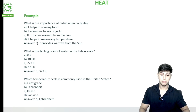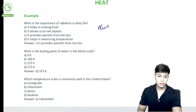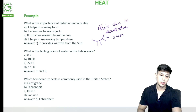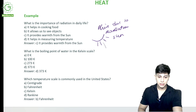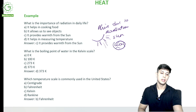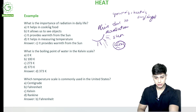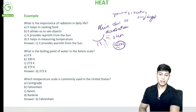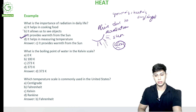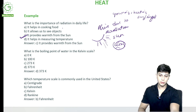What is the importance of radiation in daily life? If radiation did not exist, what would happen to the Earth? We are alive due to radiation from the sun — we are not in contact with the sun, but the light and heat it emits as radiation comes to Earth and is used for growing crops, heating, and supporting life. The most important answer is: it provides warmth from the sun.